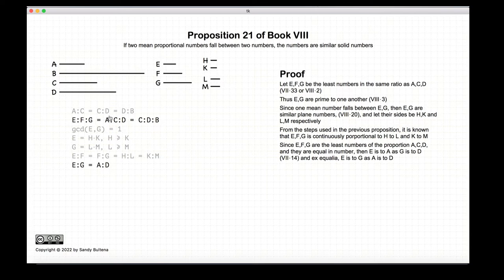e to g is equal to a to d, because e, f, and g are the least ratios or the least numbers in the ratio of a, c, and d. So according to proposition 14 of book 7, the ratio of e to g is equal to the ratio of a to d.